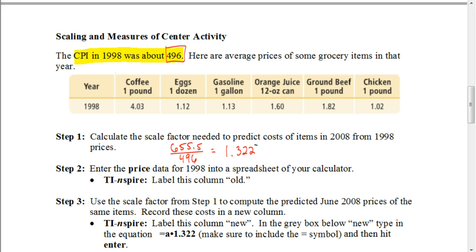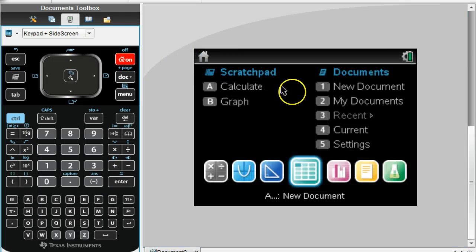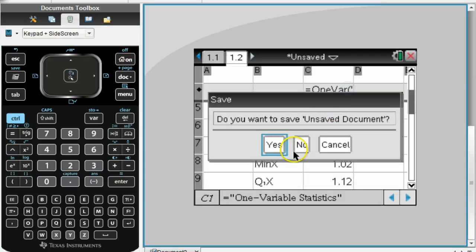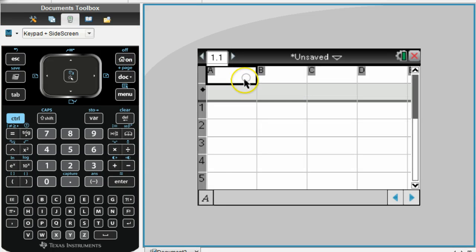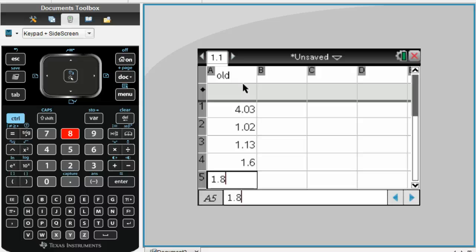I'll show you how to use that in a second. Why don't you guys now get out your calculators and go to a spreadsheet. In this first column, type in old for our original set of data from 1998. And then type in the numbers that we've got in the table. We have 4.03, 1.02, 1.13, 1.6, 1.82, and 1.02.